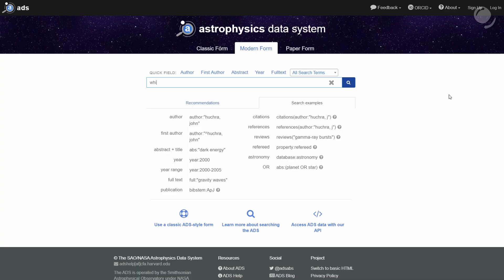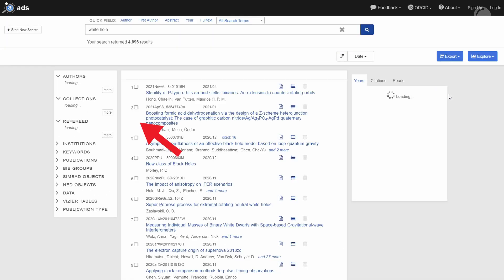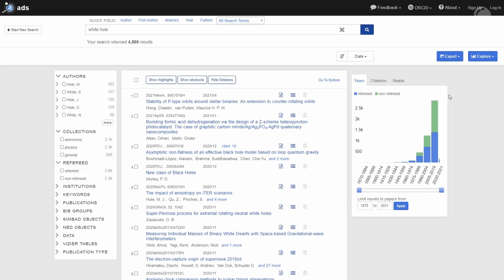But if we open astrophysics data system and enter white hole, it will show us almost 5,000 articles. Obviously, not all of them are specifically about white holes, but still there are many of those. Firstly, some of the studies are about theoretical models involving white holes, but also there are attempts to apply white hole models as solutions for some modern unsolved astrophysical problems.